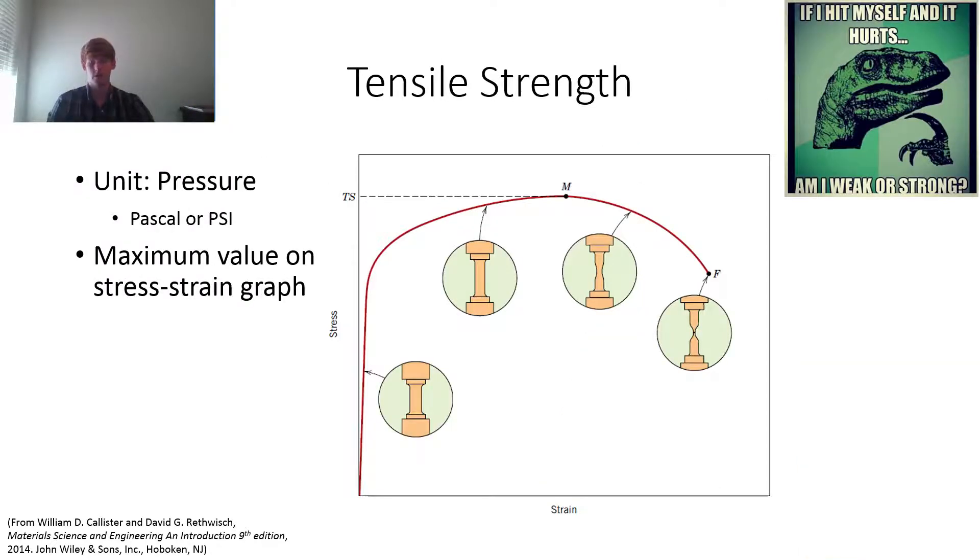So tensile strength. As you can see here, this whole region is the elastic region. And if you look close, it's really hard to tell where exactly it begins to stop being linear. So this is why we would use a 0.002 offset to find the yield point.